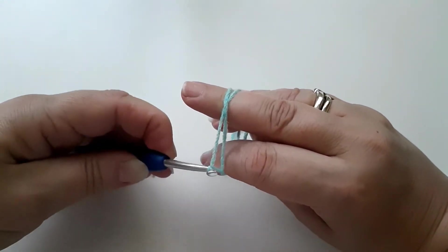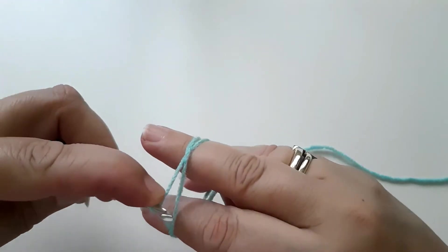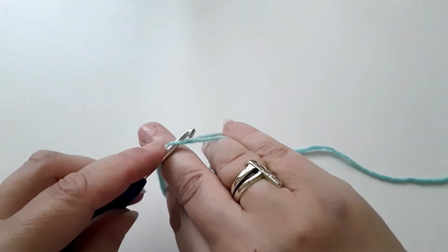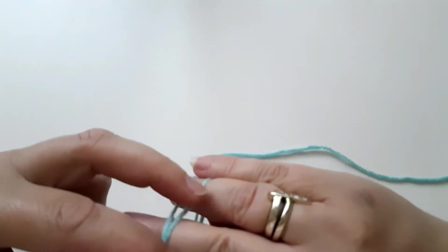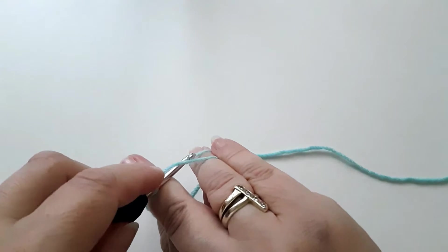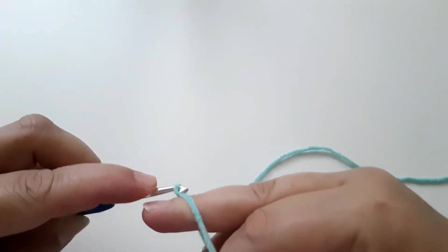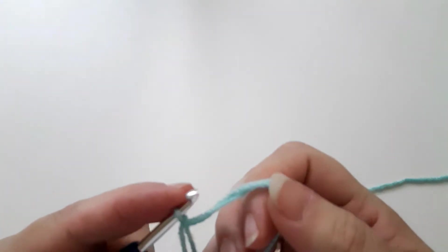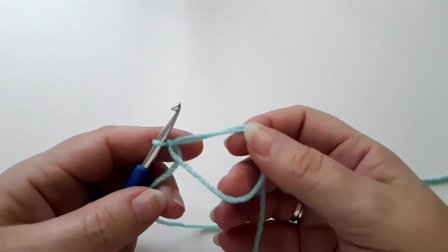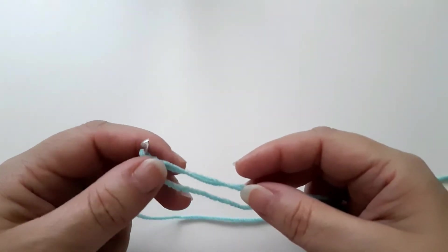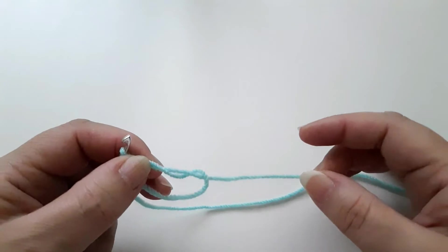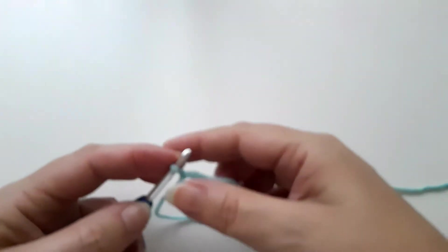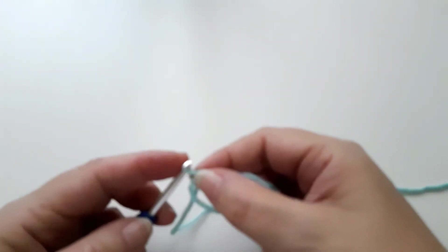Then hook back under that one that's on the left hand side, drag it through, go through in the loop and there you have your first magic circle. Now the idea with the magic circle is you can make it smaller or you can make it a bit bigger depending how many stitches you need to get into it. As you can see, I find that one quite tricky, that's not my preferred method.